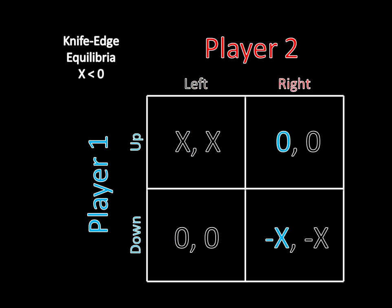So if player 1 goes up, he gets 0. If player 1 goes down, he gets negative x. Remember, x is a negative number, so you take the negative of a negative, you get a positive number. That means down is paying more than up. So that means down is always better for player 1 than up is, as long as x is less than 0.